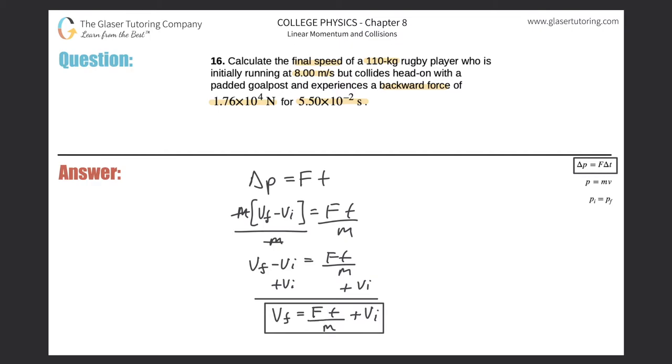Remember though, they can't be any force or any time or any mass or any velocity. They have to be the force applied to change the momentum of an object, the time over which that force is acting, the mass of the object experiencing the change in momentum, and the initial velocity of that object experiencing that change in momentum. So we do know all three. It was told to us in the problem. So basically, let's just plug it all in.